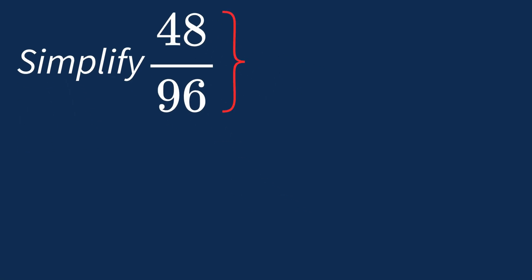To simplify 48 over 96, we need to look for the common factors between the top number, the numerator, and the bottom number, the denominator.